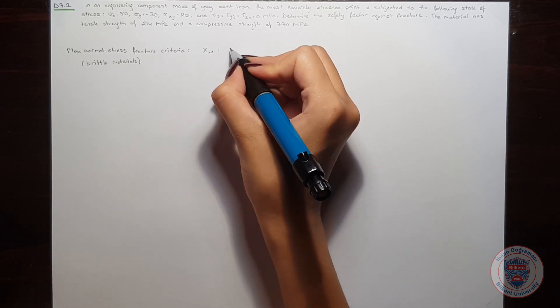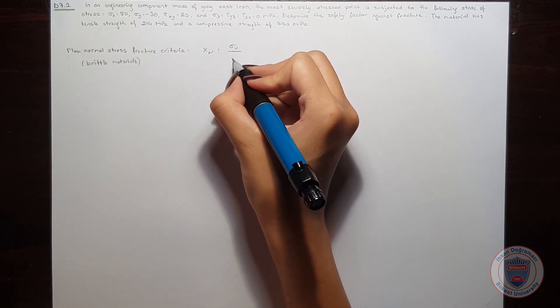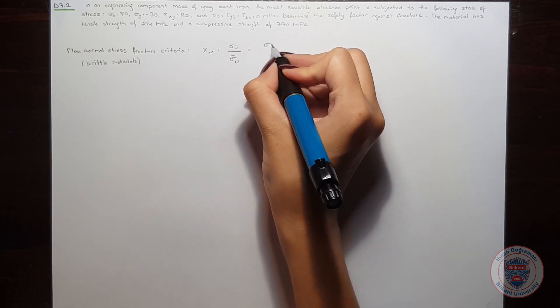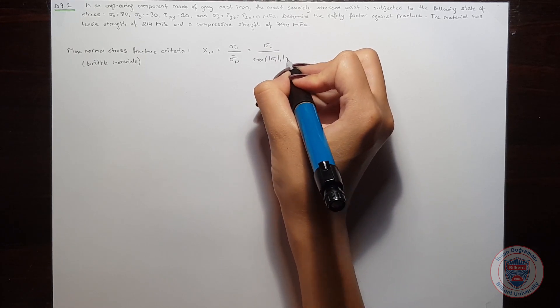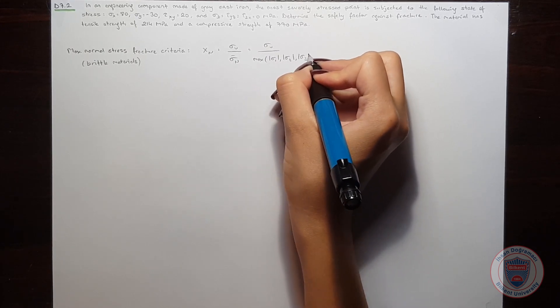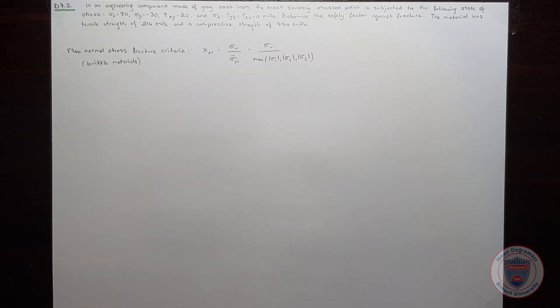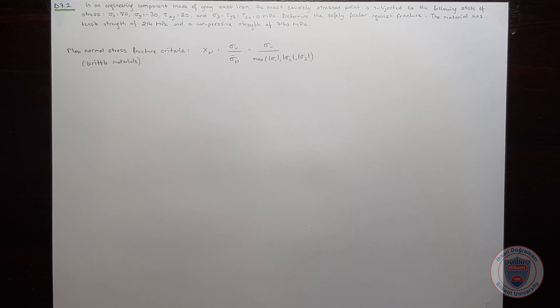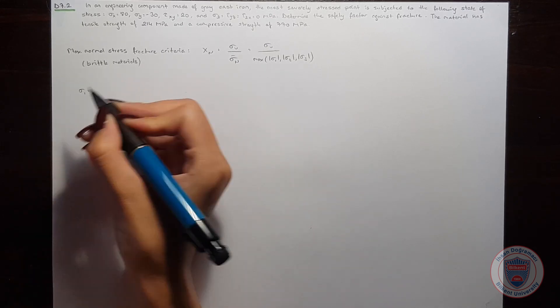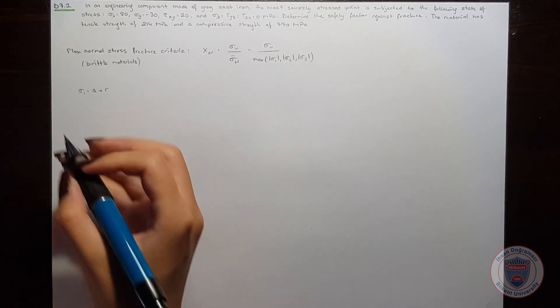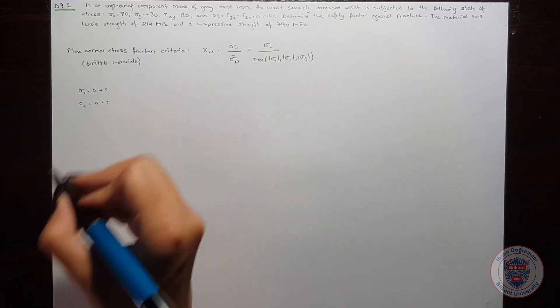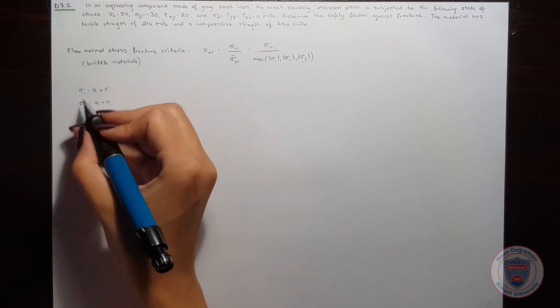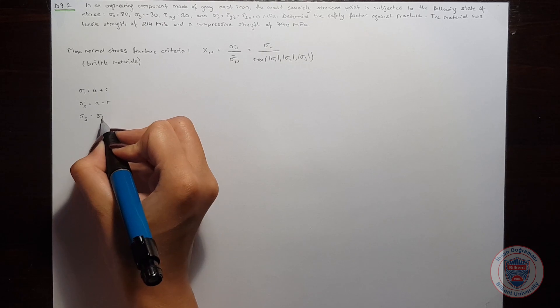The safety factor will be equal to sigma u over sigma n, which is the maximum of principal stresses. So we should first find the principal stresses. We know that from Mohr's circles, sigma 1 will be equal to the center of the circle plus the radius, and sigma 2 will be equal to the center of the circle minus radius. In our case, sigma 3 will be equal to sigma z, which is 0.